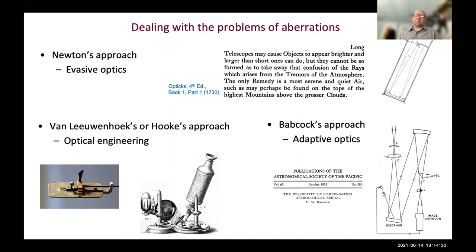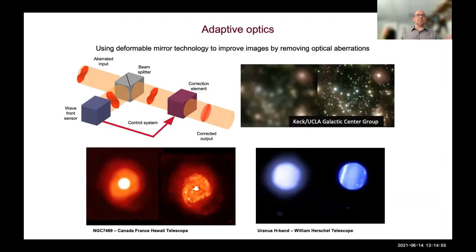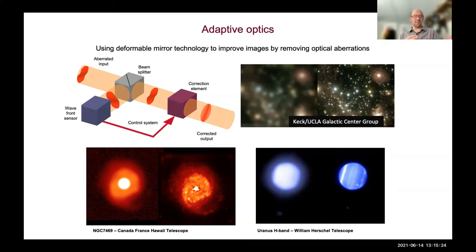Babcock's idea was basically a first deformable mirror based around an oil film - if we have an oil film and use electrostatic forces to change its shape, we can reflect the light off it and do the correction. This was the first time that idea was proposed in astronomy. Adaptive optics were subsequently used in telescopes and in the military. The principle is that you measure the wavefront distortion using a wavefront sensor, then use that information to control a correction element which removes the distortions.